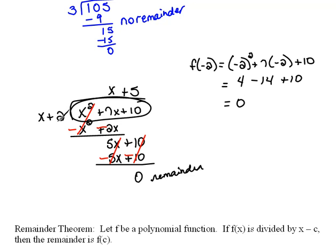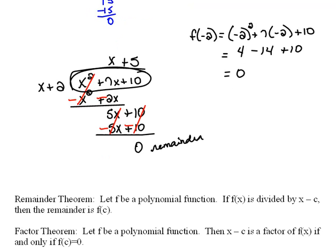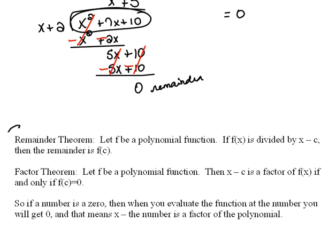If something is a factor, then it divides in evenly. If we have a root which comes from a factor, then when we evaluate the function there, we have the y value is 0 because it's an x-intercept. These all work together and that is the crux of the remainder and the factor theorems.